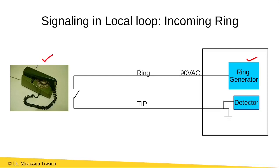When the user hears the ringtone, he lifts the handset. The handset now enters the off-hook state and the switch is closed. Once the switch is closed, the exchange detects that the switch is closed because current starts flowing through the circuit. The exchange then connects the calling party to the called party.